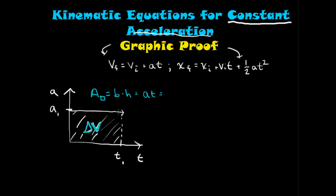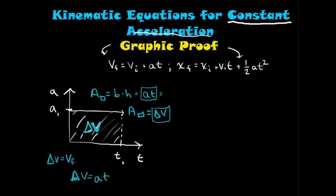So if the area of the rectangle equals the change in velocity, and the area of the rectangle equals acceleration times time, then the change in velocity equals acceleration times time. We know the change in velocity equals final velocity minus initial velocity — this should be intuitive, just like the change in money in your pocket is how much you have now minus what you started with. So we can rewrite this as vf minus vi equals at, and adding vi to each side gives us the final velocity equals the initial velocity plus acceleration times time.